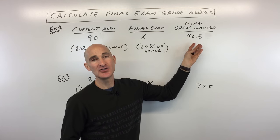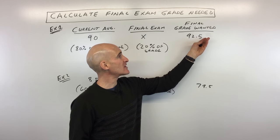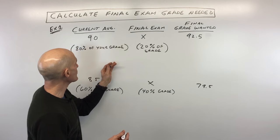But you want to end up with a 92.5 overall, because we know that 92.5 is going to round up to a 93. You're going to get the A in the class that you want. So here's what we're going to do.